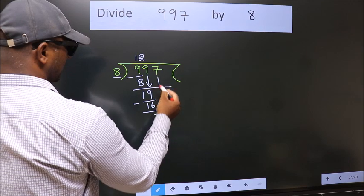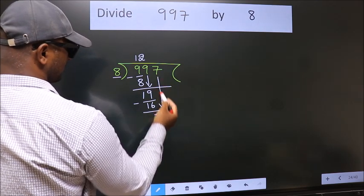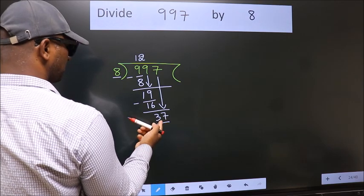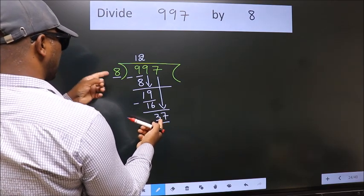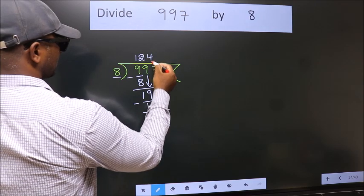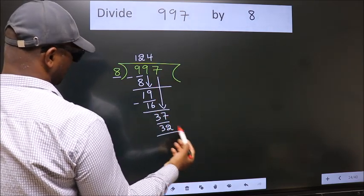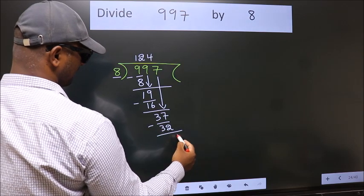After this, bring down the next number. So 7 down, giving us 37. A number close to 37 in the 8 table is 8 fours, which is 32. Now we subtract and get 5.